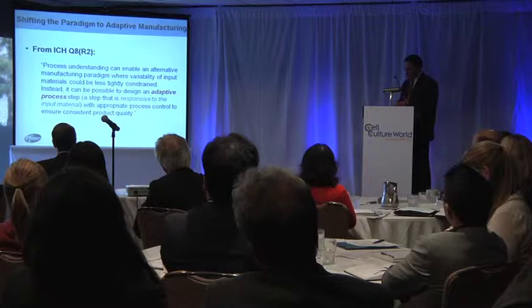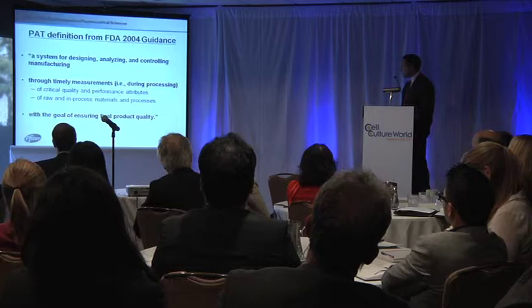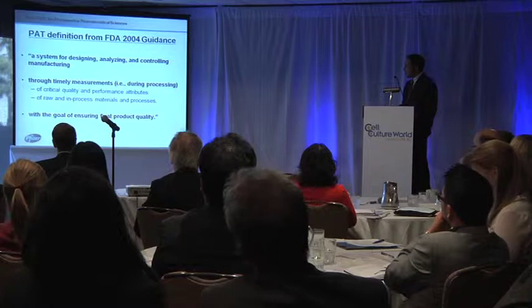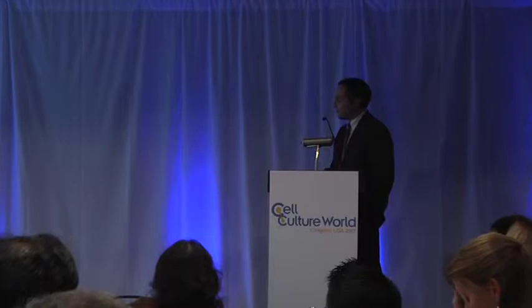So what did we finalize as our control approach? We developed an adaptive process step. Using the PAT guidance document definition — a system for designing, analyzing, and controlling manufacturing through timely measurements with the goal of ensuring final product quality — timely measurements of critical quality attributes, performance attributes, or in-process materials. What we ended up doing was using the tools we had developed to understand this process: the Ellman's assay applied directly to bioreactor samples as our timely measurement. The response was modifying how we operated our downstream step — but only if we knew UDB was present.